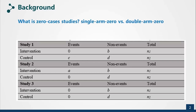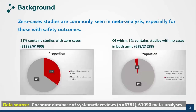For single arm zero studies, zero cases only happen in one of the arms. For double arm zero cases, zero cases happen in both the intervention and the control arms. Zero-Cases Studies are commonly seen in meta-analysis — it is estimated that 35% of meta-analyses contain studies with zero cases, of which 3% contain studies with double zero studies.